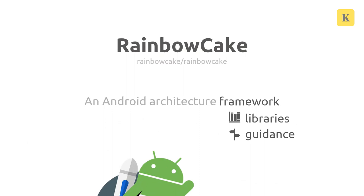This might sound familiar to you. Jetpack itself is also a set of libraries, some Android Dex stuff, as well as guidance — Google's architecture guide. So Rainbow Cake is something similar, but it builds on top of Jetpack and it's a lot more opinionated, a lot stricter.